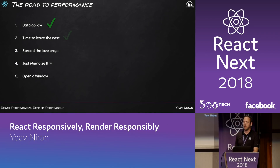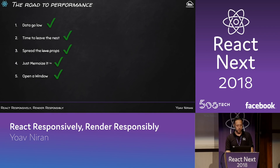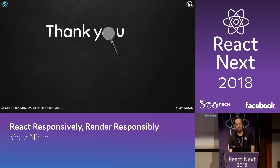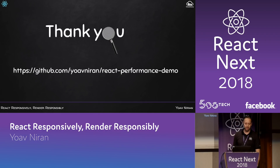Following these five steps for improvement, we did it — we got down from 600 to 10 milliseconds, and our app is much more performant. Thank you. The code for the app and all the branches is available at this URL on my GitHub.